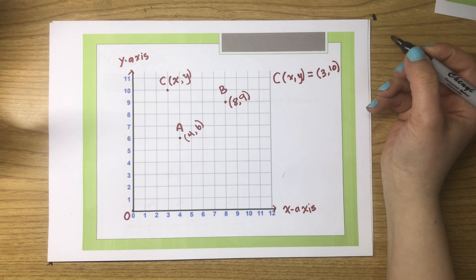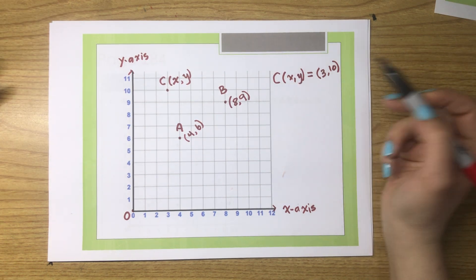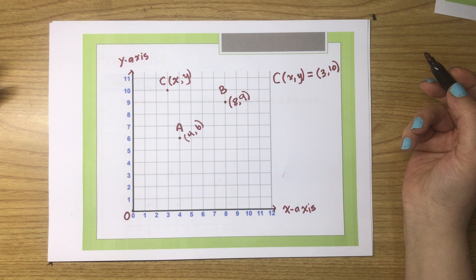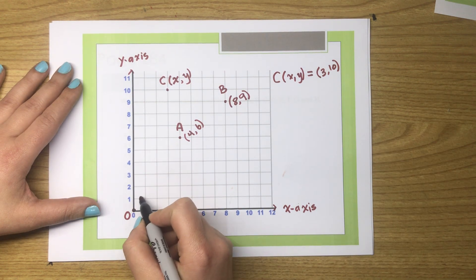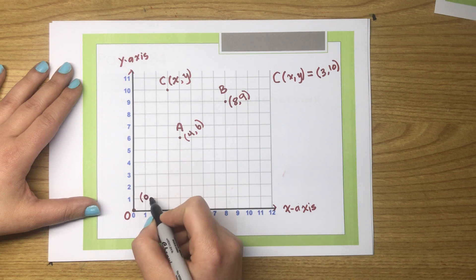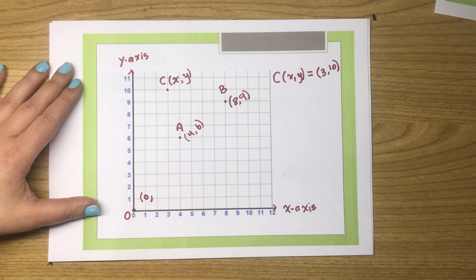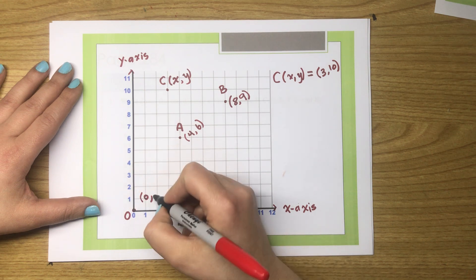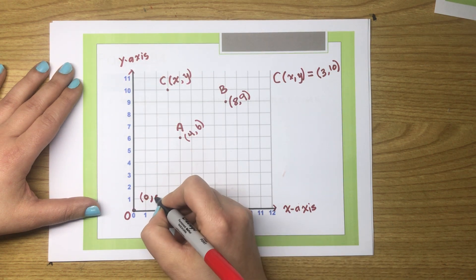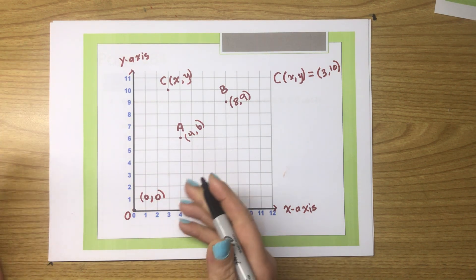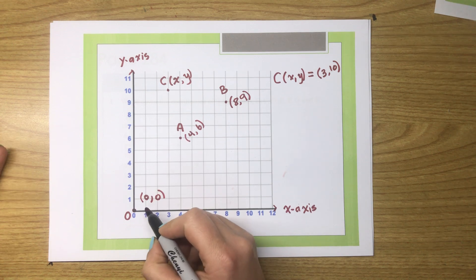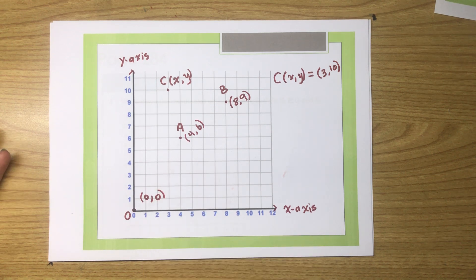That's how we locate or give the coordinate of a point. I want to point out something else: this point starts at zero on the x-axis and zero on the y-axis — this is the origin. The origin point's coordinates are zero, zero.